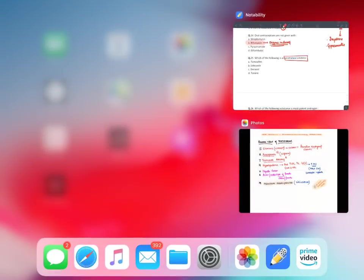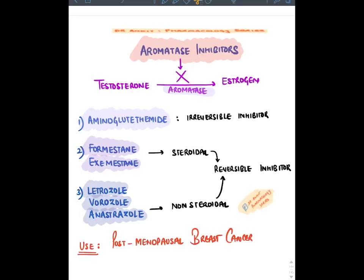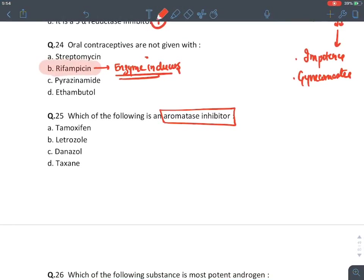Aromatase inhibitors: aromatase is an enzyme converting testosterone into estrogen. In postmenopausal females, the only source of estrogen is from testosterone produced by adrenal glands (since ovaries are non-functional). Drugs: aminoglutethimide (irreversible inhibitor); exemestane (steroidal reversible inhibitor); letrozole, vorozole, and anastrozole (non-steroidal reversible inhibitors — best, drug of choice for postmenopausal estrogen-positive breast cancer). Answer: letrozole.